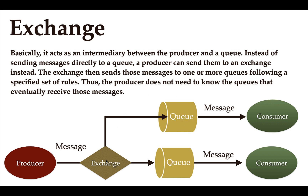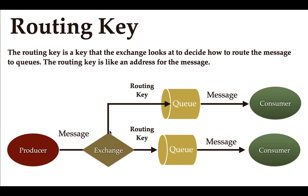Next, what is a routing key? A routing key is a key that the exchange uses to route a message to the respective queues — it's like an address for the message. In complex applications with multiple queues, for example Q1 and Q2, the exchange uses the routing key sent by the producer to determine which queue the message should be routed to.